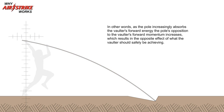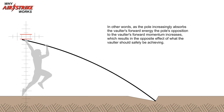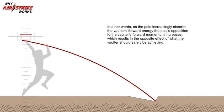In other words, as the pole increasingly absorbs the vaulter's forward energy, the pole's opposition to the vaulter's forward momentum increases, which results in the opposite effect of what the vaulter should safely be achieving.